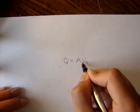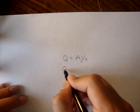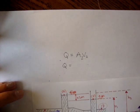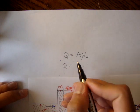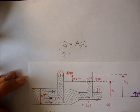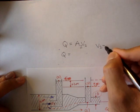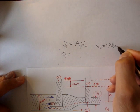So q is equal to a times v2. And v2 we found to be 1.98 meters per second.